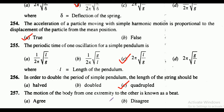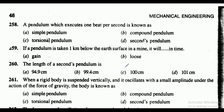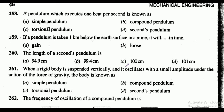Question 257: the motion of the body from one extremity to the other is known as a beat — agree or disagree? The answer is agree. Question 258: a pendulum which executes one beat per second is known as — options are simple pendulum, compound pendulum, torsional pendulum, or seconds pendulum.